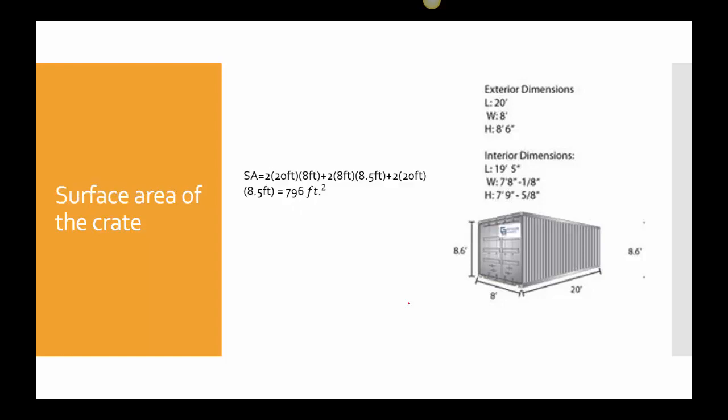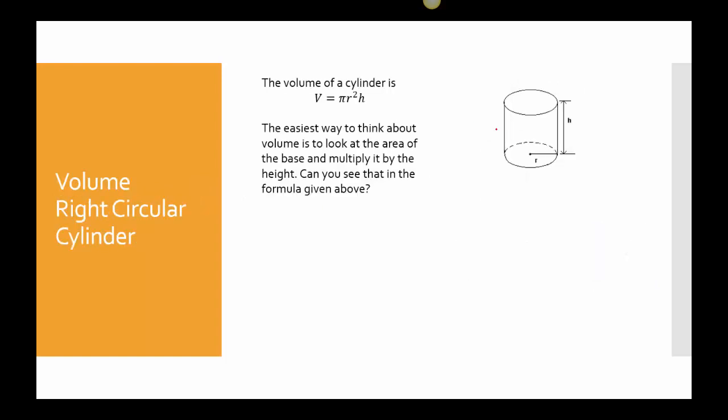Then surface area. Surface area says how much metal is in this thing. That makes a difference because the more surface area you have, the more weight it's going to be, and the stronger truck you're going to have to have to pull it, and the more it's going to cost, too. This one, remember when I'm doing surface area, I have sides that are the same. So I have the 20 by 8.6 and I have that twice. I have the 8 by 8.6 and I have that twice. And then I have 20 times 8 and I have that twice. So I have 2 times 20 times 8 and 2 times 8 times 8.5, and 2 times 20 times 8.5. That gave me 796 square feet.